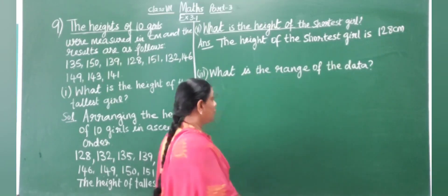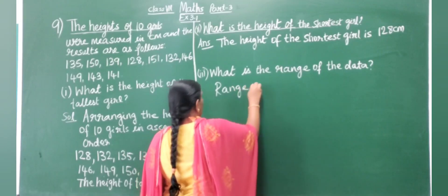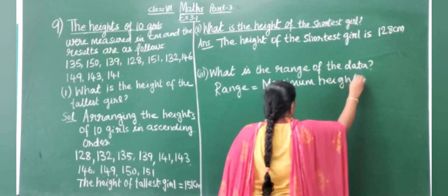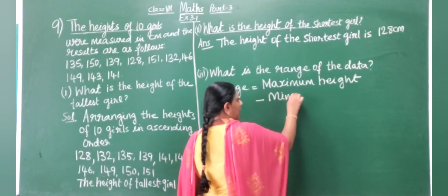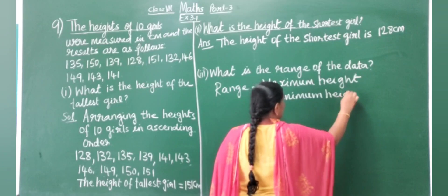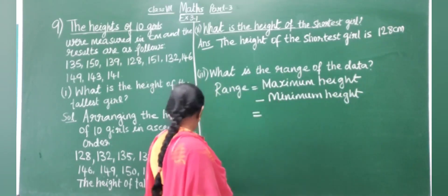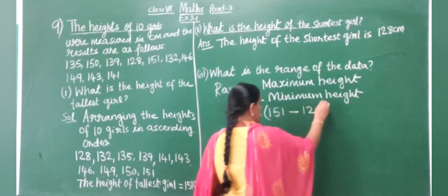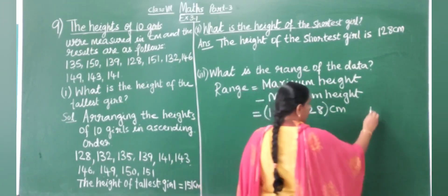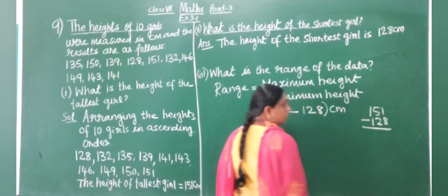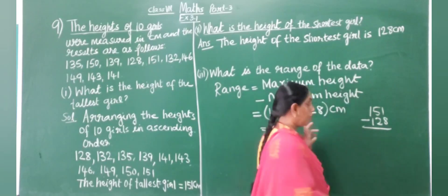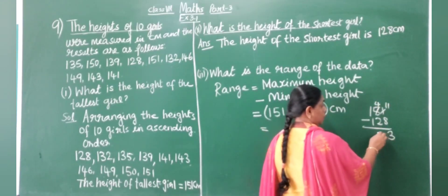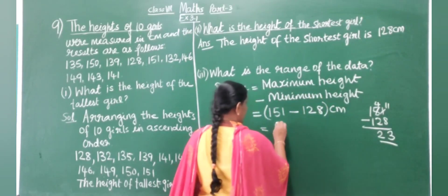Now we have to find the range. Range equals maximum height minus minimum height. Maximum height is 151, minimum height is 128. 151 minus 128: borrow to get 11 minus 8 equals 3, and 4 minus 2 equals 2. So the range is 23 centimetres.